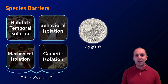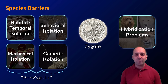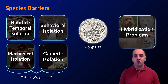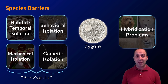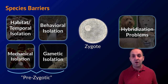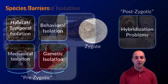All prezygotic barriers prevent sperm and egg from meeting up. Even after sperm and egg meet up, there are a couple of things that can happen to the offspring that prevent it from successfully reproducing itself — in that case it's still considered a speciation event because the offspring can't reproduce. Those would be our postzygotic barriers. We'll go into each one in turn.